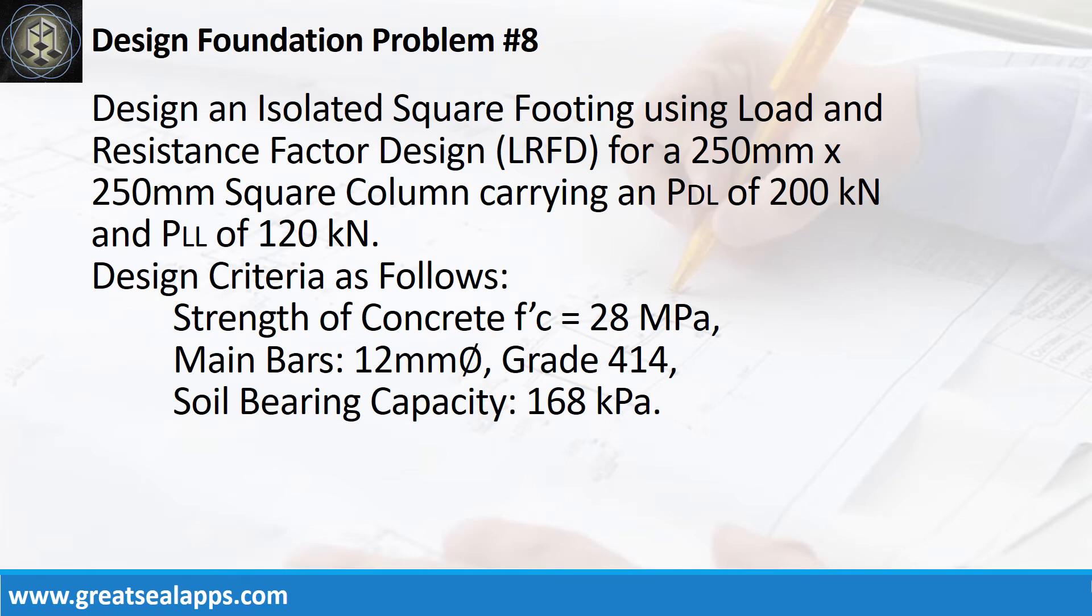Design an isolated square footing using load and resistance factor design for a 250 mm x 250 mm square column carrying an actual dead load of 200 kN and actual live load of 120 kN. Design criteria as follows: strength of concrete, 28 MPa; main bars, 12 mm bar, grade 414; soil bearing capacity, 168 kPa.